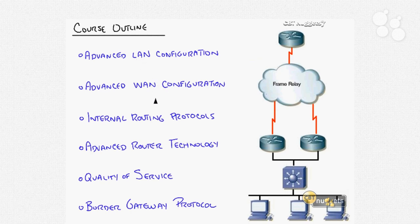LAN configuration focuses primarily around the Catalyst 3550 series switch and tying that into the whole scheme of things. That switch is not just a switch — it's a whole other world when we get there. WAN configuration focuses on the different WAN technologies, with frame relay being the biggest and the freshest on my mind, because that's what we constantly use in the CCIE lab. ATM technology is also covered, and ISDN as well.